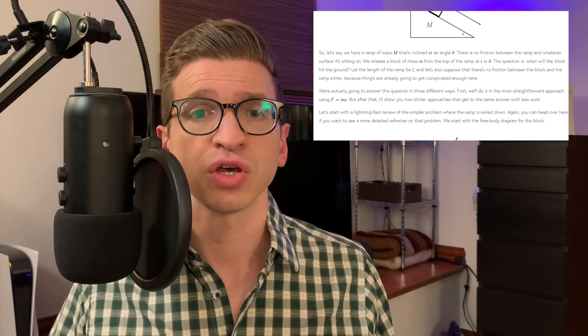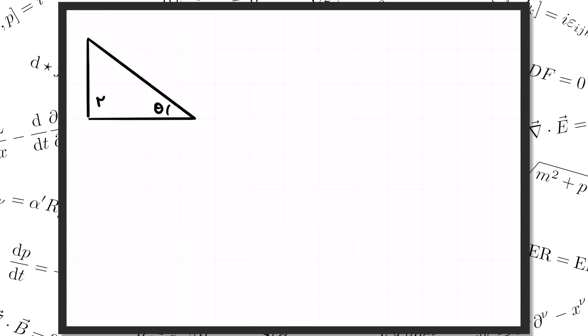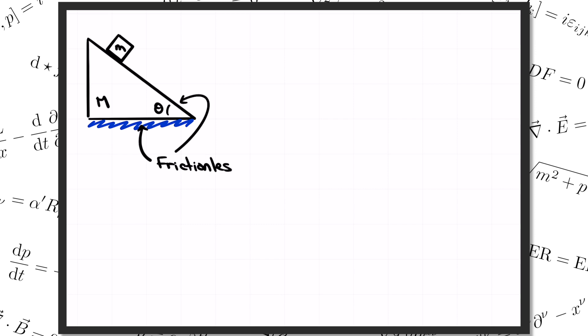I've also written up notes that cover all of this — you can get those for free at my website, and I'll put that link down in the description. The setup is that we have a ramp inclined up at an angle theta, and we set a block on top of it. The ramp is totally frictionless, meaning both the block on the top surface slides without friction, and also the bottom of the ramp slides on whatever table it's sitting on. The block has mass m, the ramp has mass M, and it has length l. We want to know how long it'll take for the block to slide all the way down to the ground if we release it from rest from the top of the ramp.